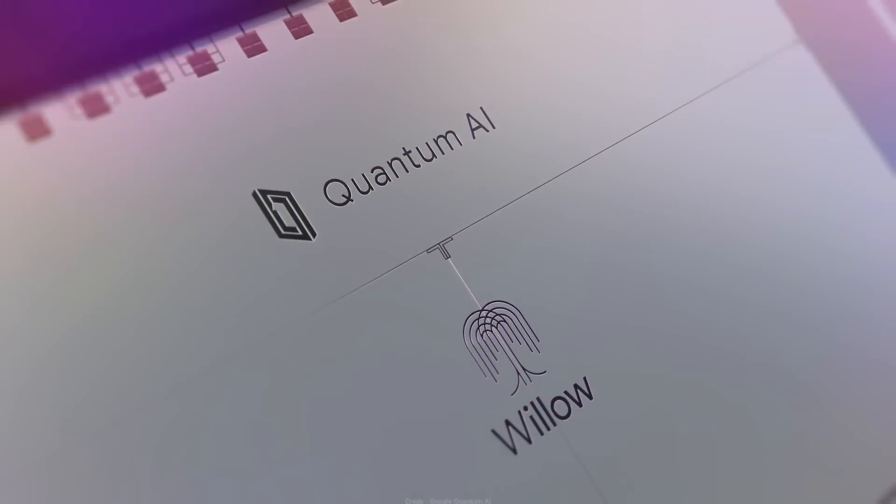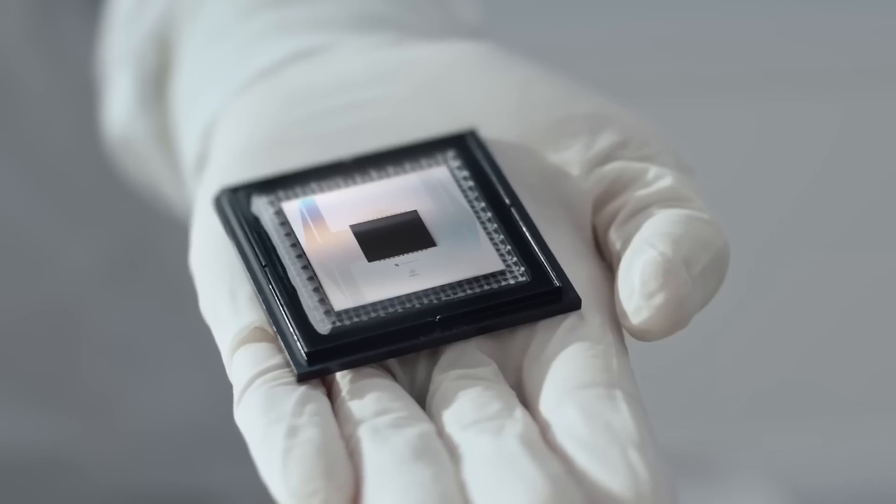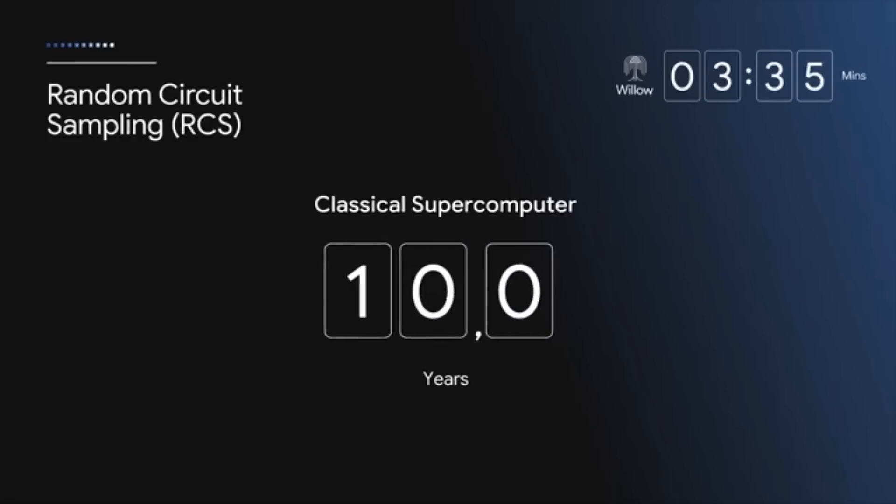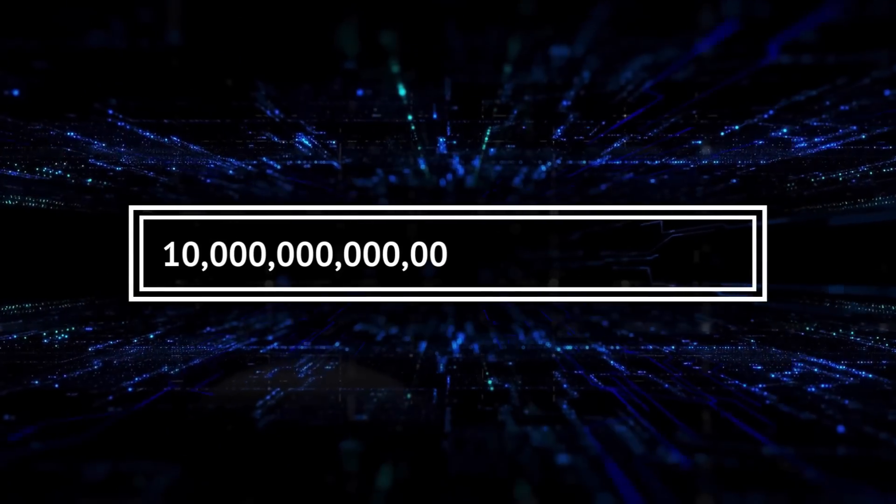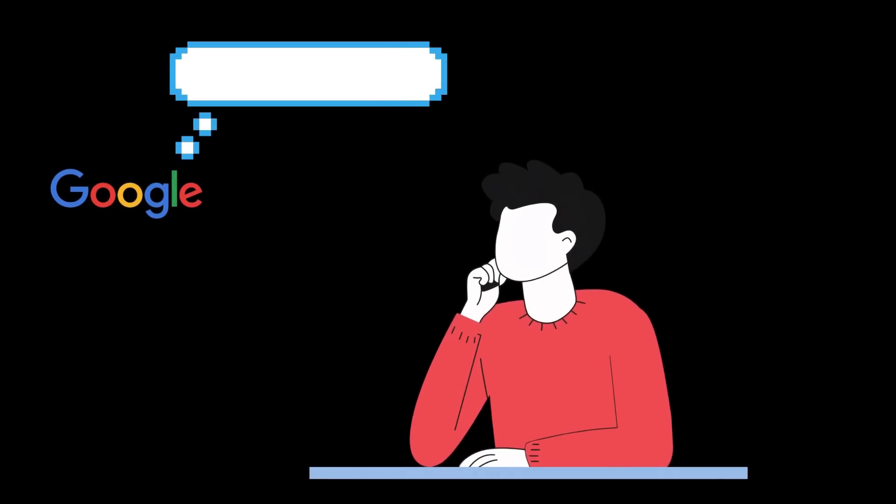This follows the release of Google's latest Willow chip, introduced in December last year as an experimental quantum computer, capable of solving a calculation in just five minutes, one that would take even the most advanced supercomputers over 10 septillion years to complete, far exceeding the age of the known universe. Not only that, Google has also made an eyebrow-raising claim, saying that its new quantum chip may be tapping into parallel universes to achieve its results.